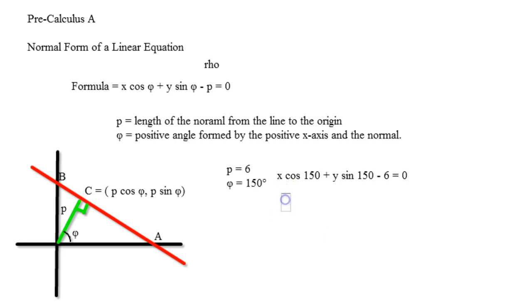Alright, and so we simplify it, and cosine of 150 is going to be the same as cosine of 30, except in the second quadrant, and so it's going to be negative root 3 over 2 x, plus that is going to be 1 half y, minus 6 equals 0.